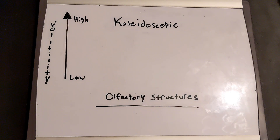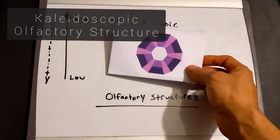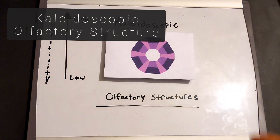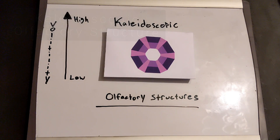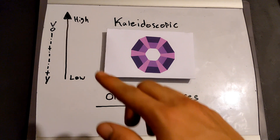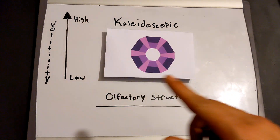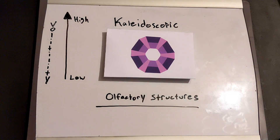The final structure I'd like to touch on today is called the kaleidoscopic structure. As you can see, the kaleidoscopic fragrance structure is pretty complex. It uses various notes to create several different chords all working in unison. They don't phase conventionally and they're relatively unpredictable.